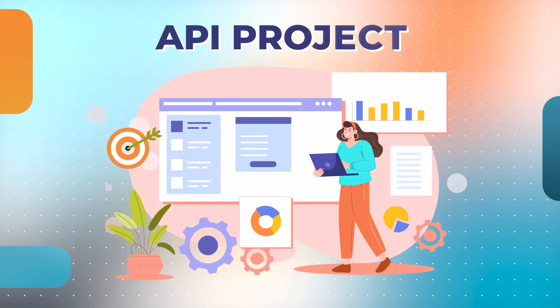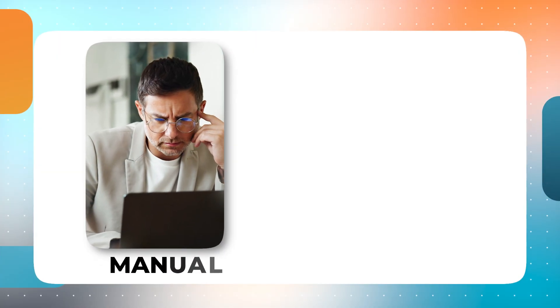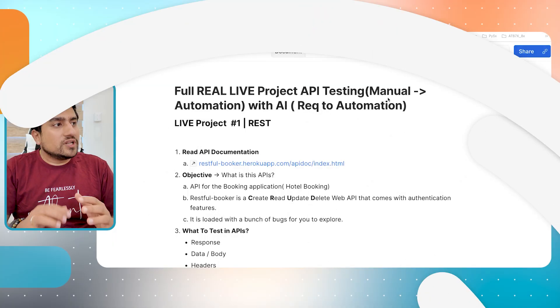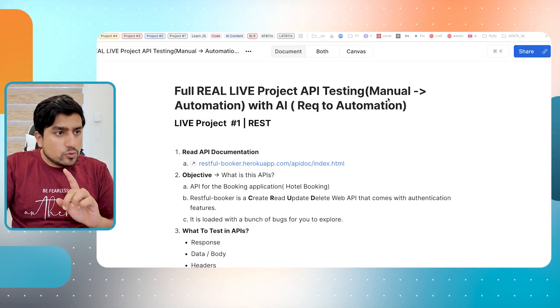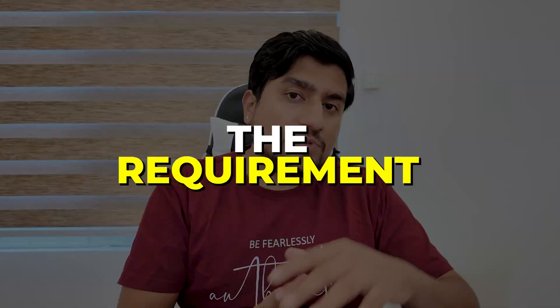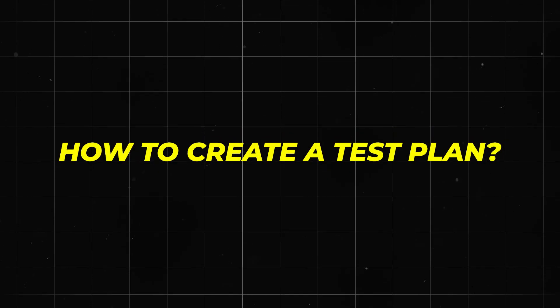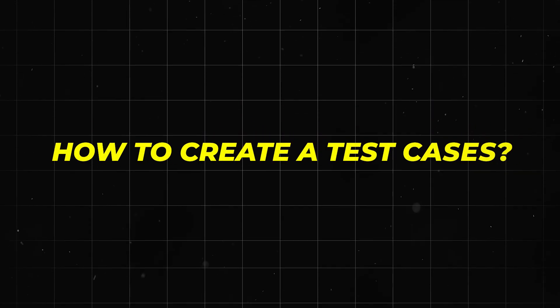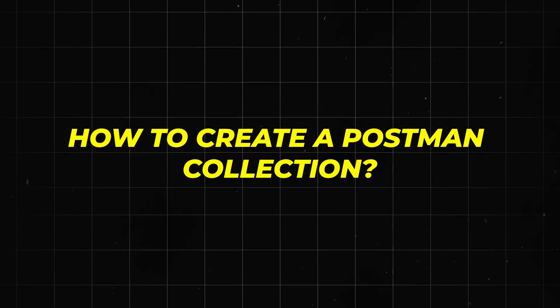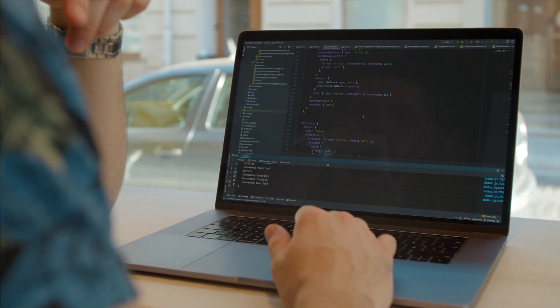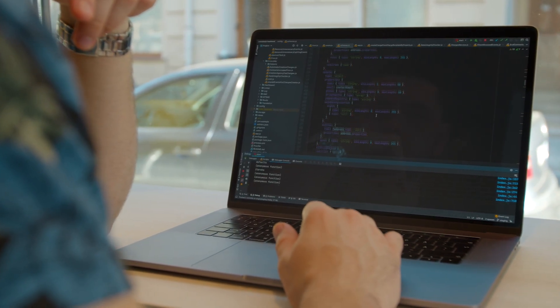In this video, we are going to learn how exactly a full real-life API project is done from a manual point of view as well as through the automation point of view. I'm going to give you exactly the collections. We are going to go from the requirement, how to create a test plan, how to create test cases, how to create a Postman collection, and also how you can automate them using REST Assured.